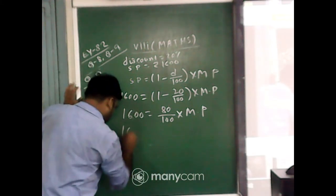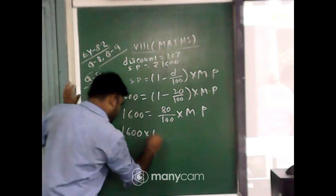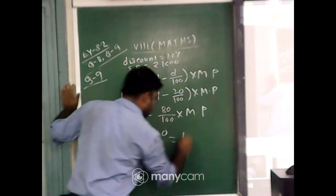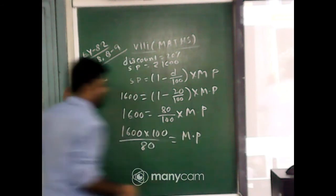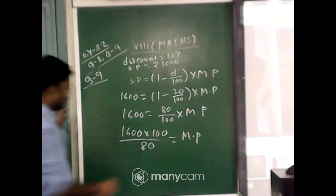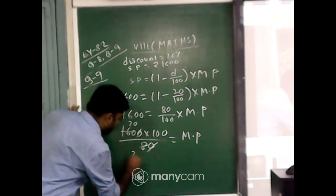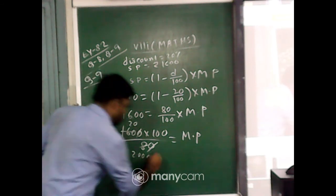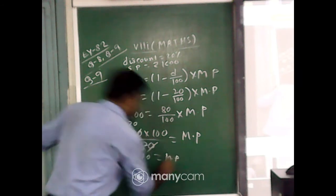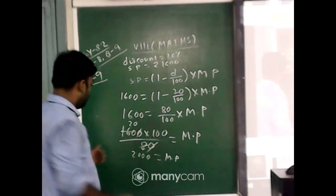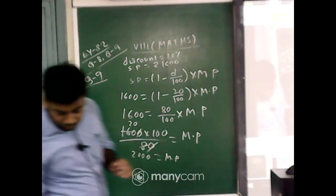Now that 100 will be multiplied to this side, that is 1,600 into 100 by 80. That is the mark price of that product. So just reducing zeros, that is 2,000. 2,000 is the mark price. So what is the mark price of that skates? That is 2,000. This is the answer of question number 9.